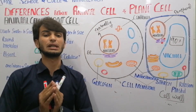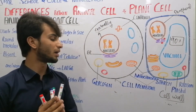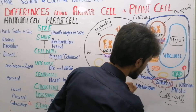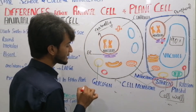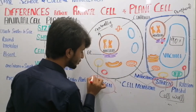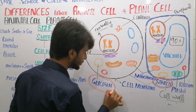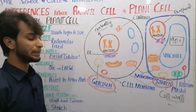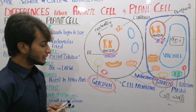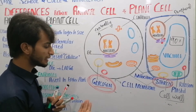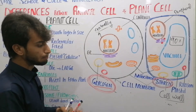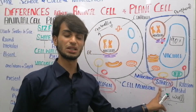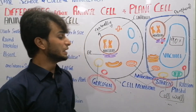Another difference is food reserve. Plants store reserve food in the form of starch, while animal cells store food in the form of glycogen. These are the key differences between plant and animal cells.